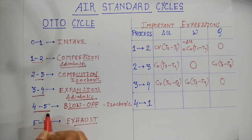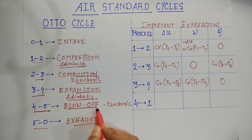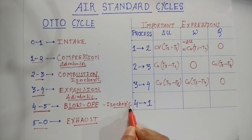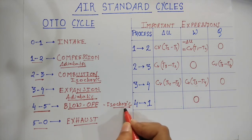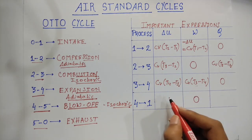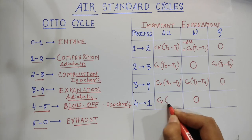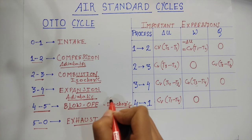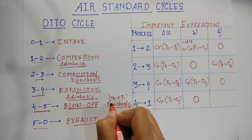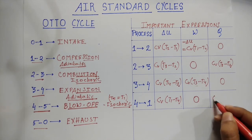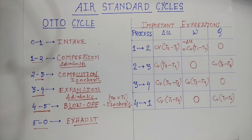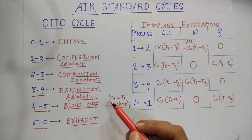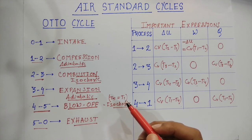The last process is 4 to 1, also written as 4 to 5 in the diagram — the blow-off process, which is also an isochoric process. So work done w = 0. Since isochoric, the volume doesn't change, so ΔU = cv(T1 - T4). As T5 = T1 from the graph, the value of q = cv(T1 - T4). These expressions are very important from an exam point of view. We have now reached the end of the Otto cycle derivations and processes, and will go further into the derivation of efficiency of an Otto cycle.